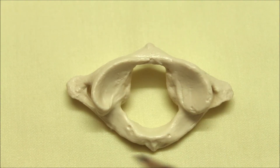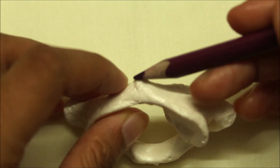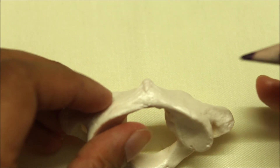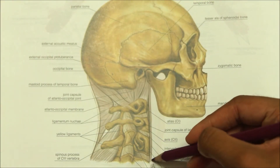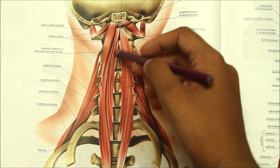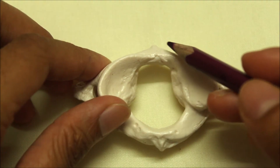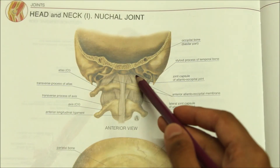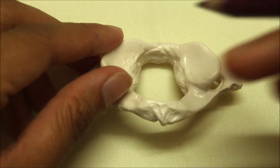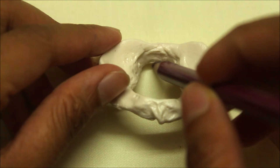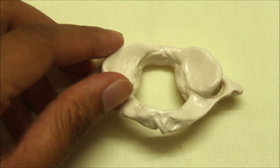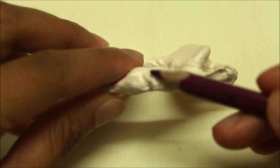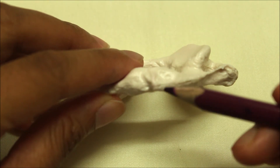Moving on to the attachments on the atlas. The anterior tubercle provides attachment to the anterior longitudinal ligament and provides insertion on each side to the upper oblique part of the longus colli. The upper border of the anterior arch gives attachment to the anterior atlanto-occipital membrane. The lower border of the anterior arch provides attachment to the lateral fibers of the anterior longitudinal ligament. The posterior tubercle provides attachment to the ligamentum nuchae in the median plane and gives origin to the rectus capitis posterior minor on each side.